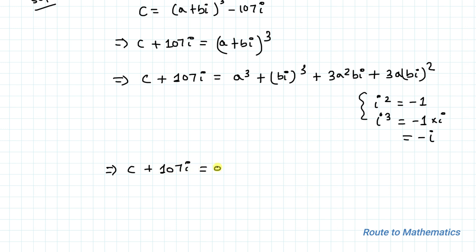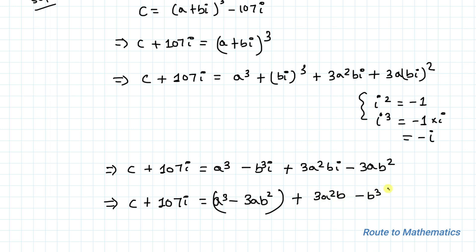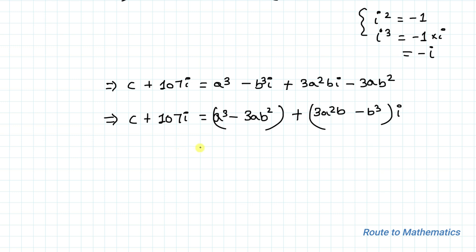Substituting these values, c plus 107i equals a cubed minus b cubed times i plus 3a squared times bi plus 3ab times i squared. Since i squared equals minus 1, the last term becomes minus 3ab squared. Rearranging real and imaginary parts: c plus 107i equals a cubed minus 3ab squared plus 3a squared b minus b cubed times i.